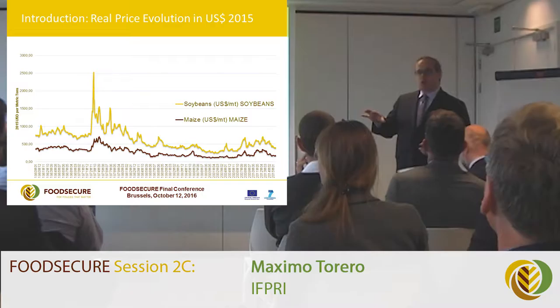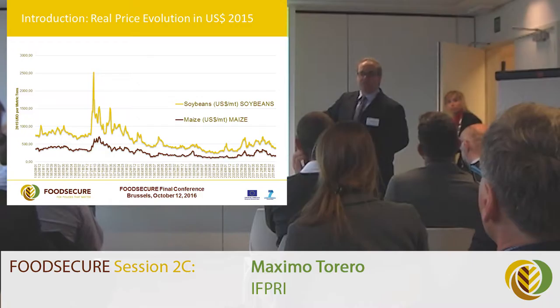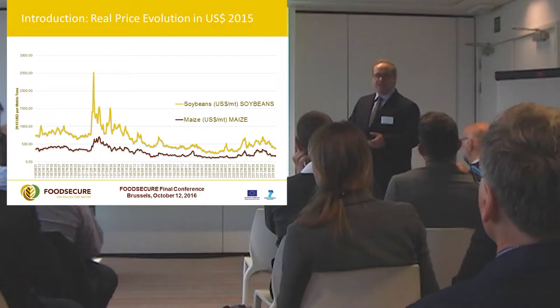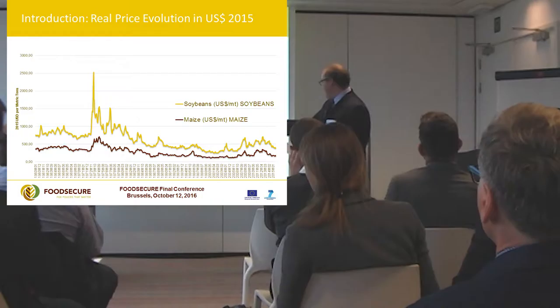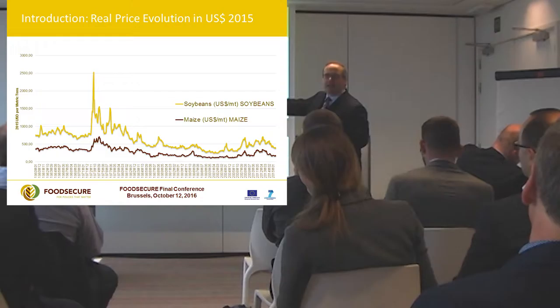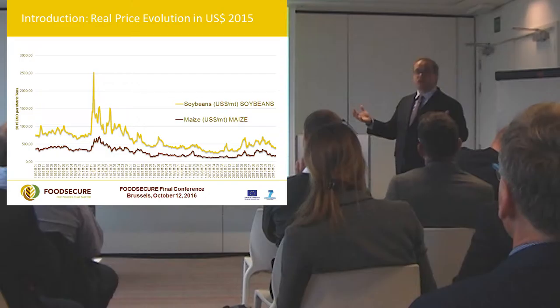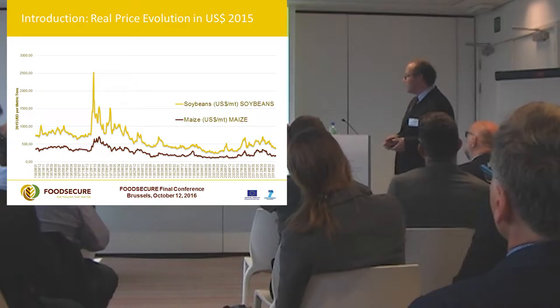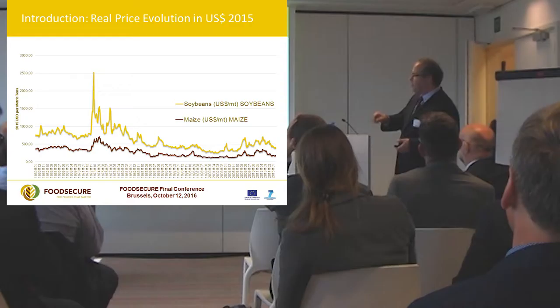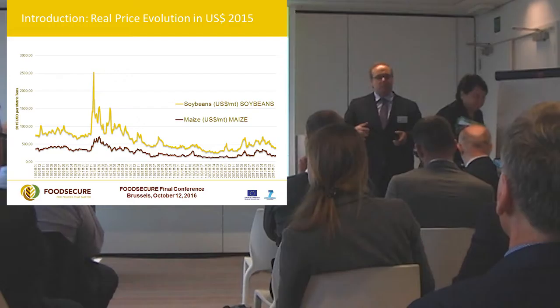The first thing to bring, which is a little bit different from the graph shown in the morning — that was nominal prices — this is in real terms, a real price evolution looking at relative prices. What we observe is that what happened in 2007-2008 was not by far the highest real price spike. There were many others that were higher in the 70s, even in the 80s.